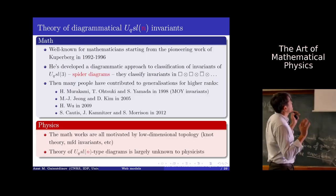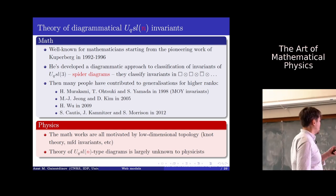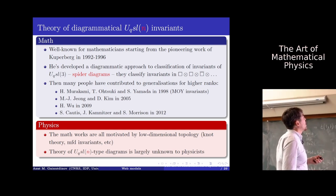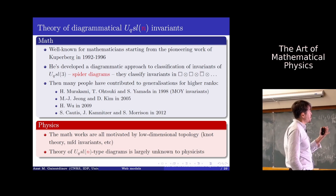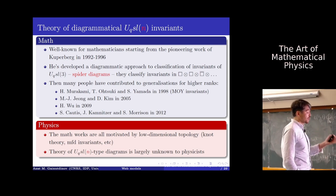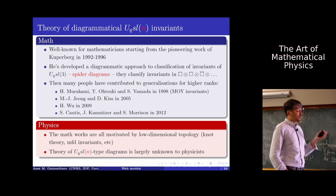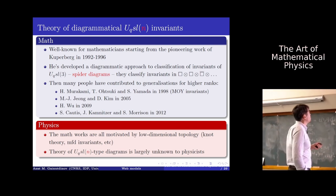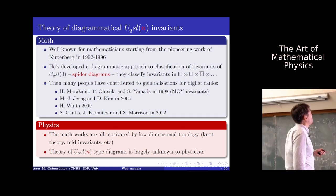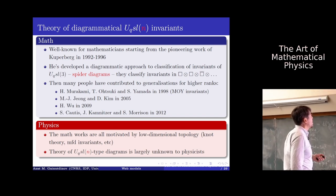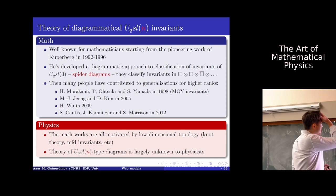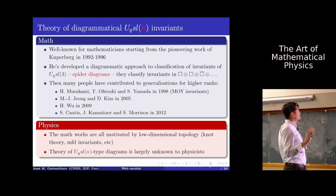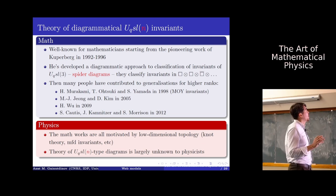Many people since then contributed to generalizations to higher ranks. For example, in 1998, Murakami, Otsuki, and Yamada introduced MOY invariants, using spider-type diagrams to construct invariants generalizing the Jones polynomial to U_q(SL_N). An important group for us is Cautis, Kamnitzer, and Morrison, who in 2012 introduced a very convenient diagrammatic calculus for U_q(SL_N)-type diagrams. However, for physicists, these works are largely unknown and no physical model based on this type of diagram has been identified.